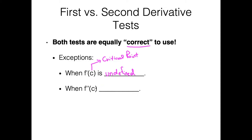The second exception is when f double prime of c, at that same critical point, equals zero. That's one of the places where the second derivative test breaks down. So we really have to use the first derivative test in both of these cases. Those are going to be two hard restrictions to what I'm about to tell you.